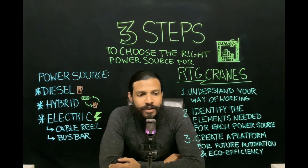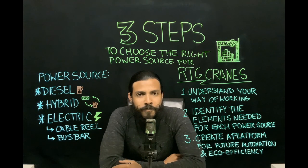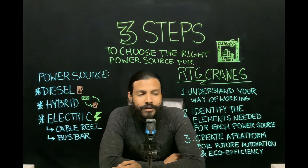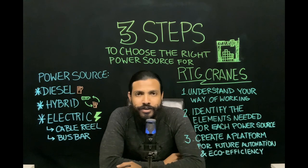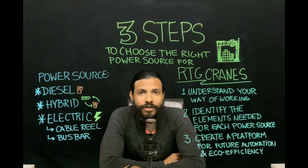Step three, and I consider this one of the most important: you need to create, at least from the design point of view, a platform where you will enable future automation or efficiency. By this I mean you need to have all the distances planned for a future human-machine segregation — I am referring to fences and many other elements that will enable different levels of RTG automation in your terminal.